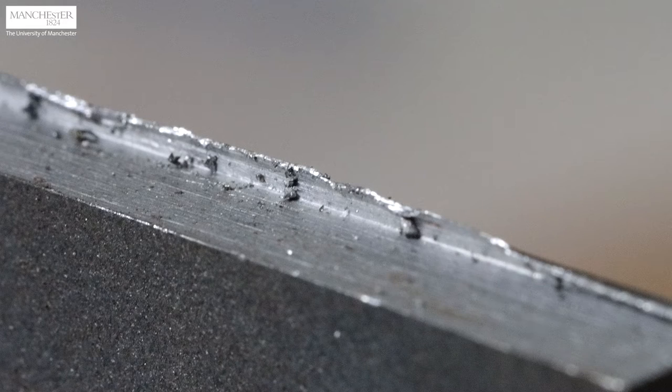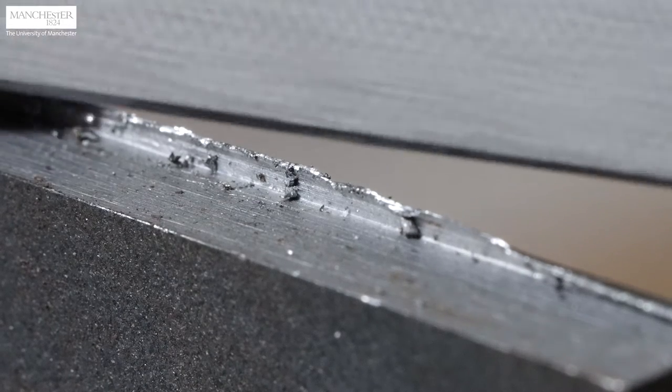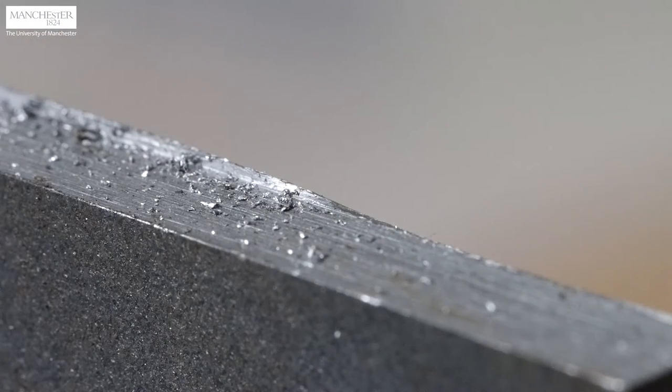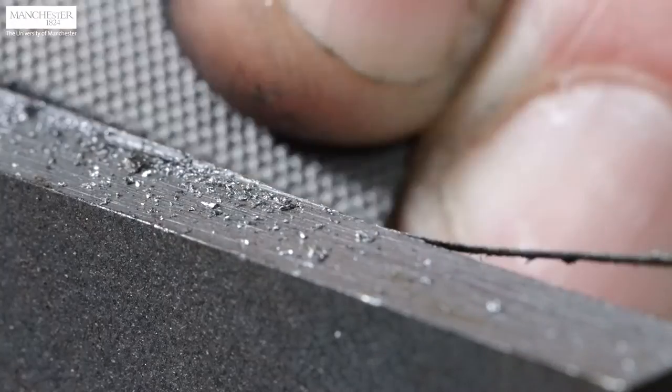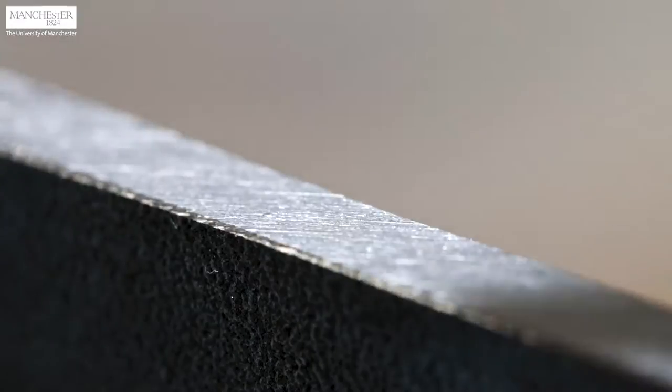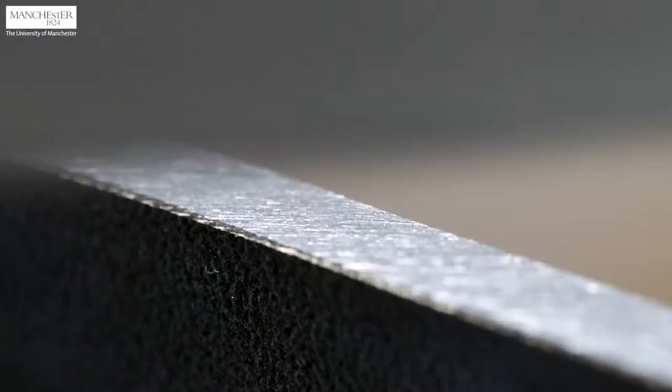After filing is completed, the part may have burrs which may not be safe for handling. For safety, we always deburr sharp edges and corners. It's recommended to lift up the part to easily deburr the edges and corners. Here's how the surface and edges look after filing and deburring.